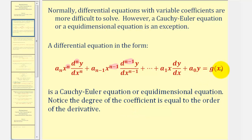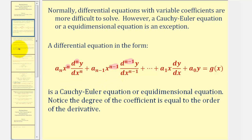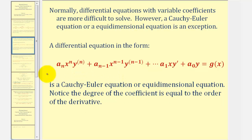If g of x is zero, we have a homogeneous differential equation, and if g of x doesn't equal zero, we have a non-homogeneous differential equation. We could also express the form of a Cauchy-Euler equation in an alternative form as well.